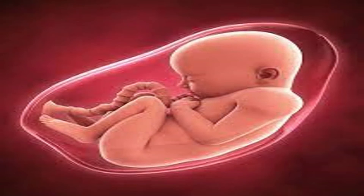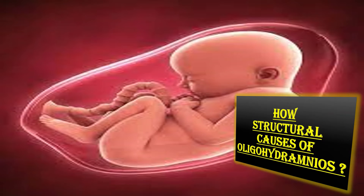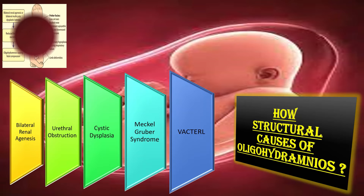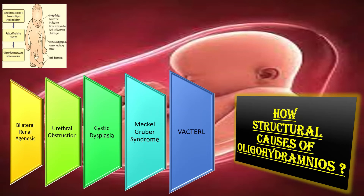Now we will explain how structural causes result in oligohydramnios. First of all, bilateral renal agenesis, also called dysplasia, which occurs in cases of Meckel syndrome. By the second trimester, the fetal skin becomes keratinized making it impermeable to further diffusion, and at this time the fetus contributes to amniotic fluid volume almost exclusively through fetal urination. In renal agenesis, urine production by the fetus is diminished, resulting in a reduced amount of liquor.